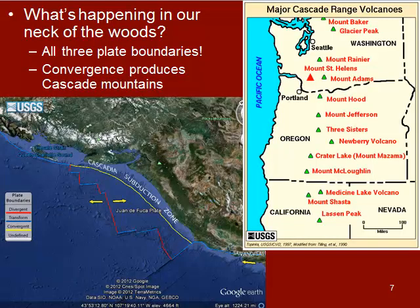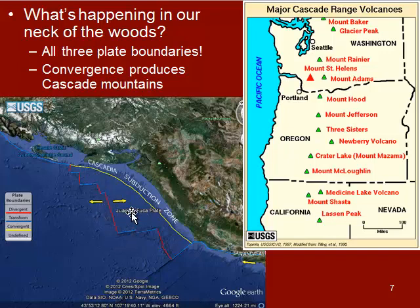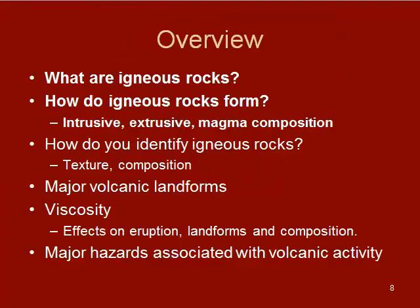What's happening in our neck of the woods? We are right about here on this map — here's the Seattle area and California. Off the coast of Oregon and Washington is a subduction zone where we have two plates colliding. The Juan de Fuca plate is oceanic and is being subducted below the North American plate. We also have a divergent plate boundary between the Juan de Fuca and the Pacific plate, and transform boundaries as well. These Cascade volcanoes — like Mount Hood and Mount Adams, which you can see from campus pretty often — are being formed from this subduction zone and the flux melting happening deep inside the earth. That's a brief overview of what igneous rocks are and how they form. Make sure you check your textbook for more detailed descriptions.